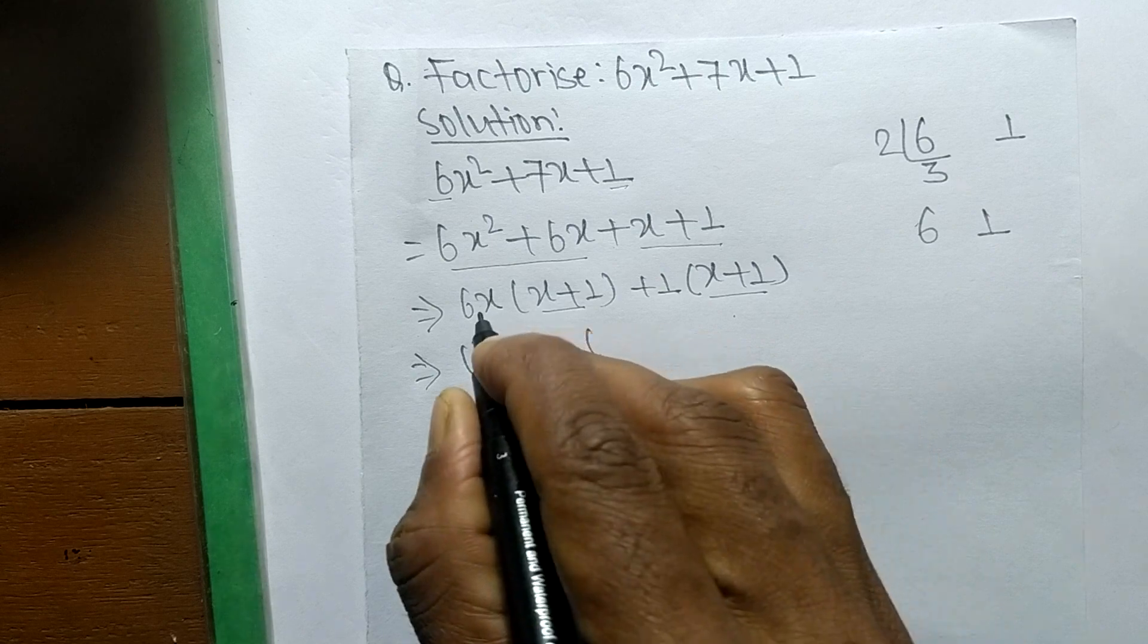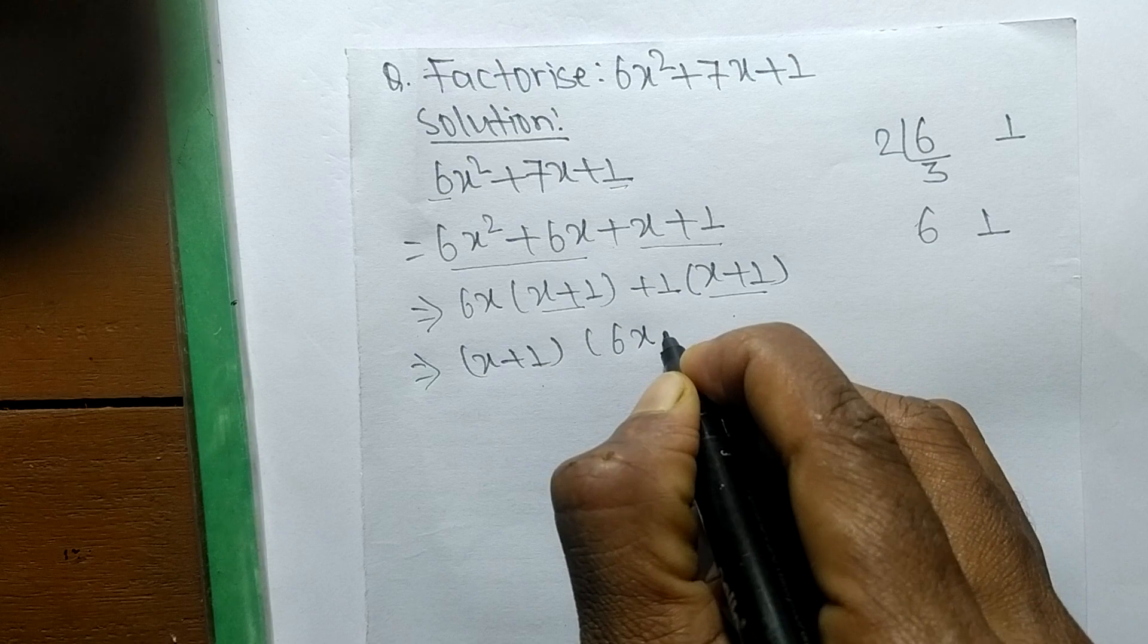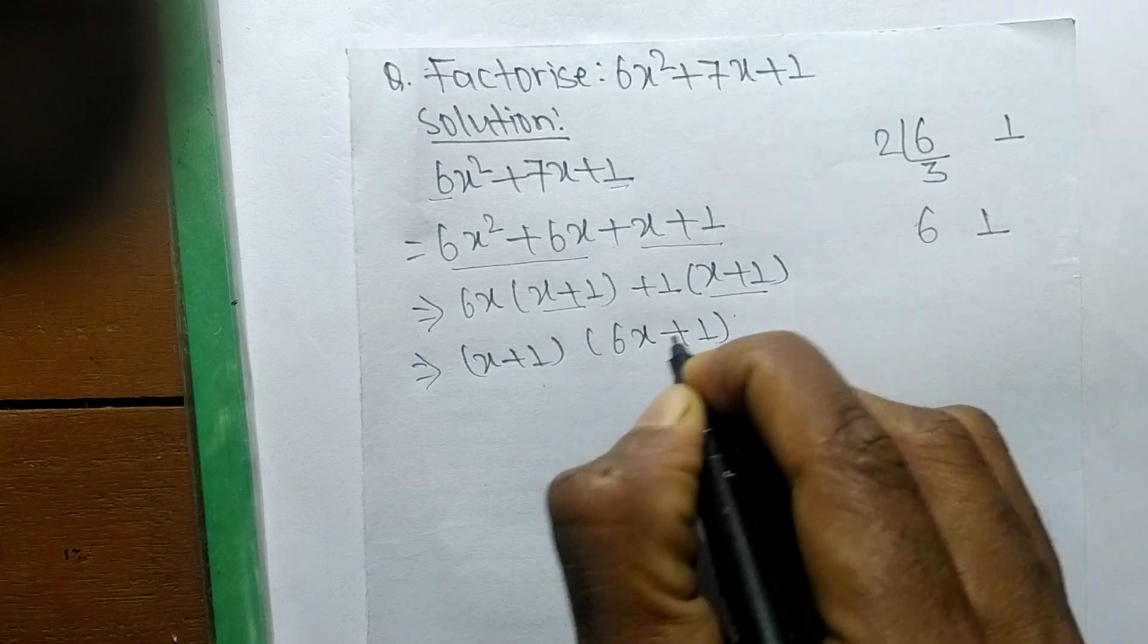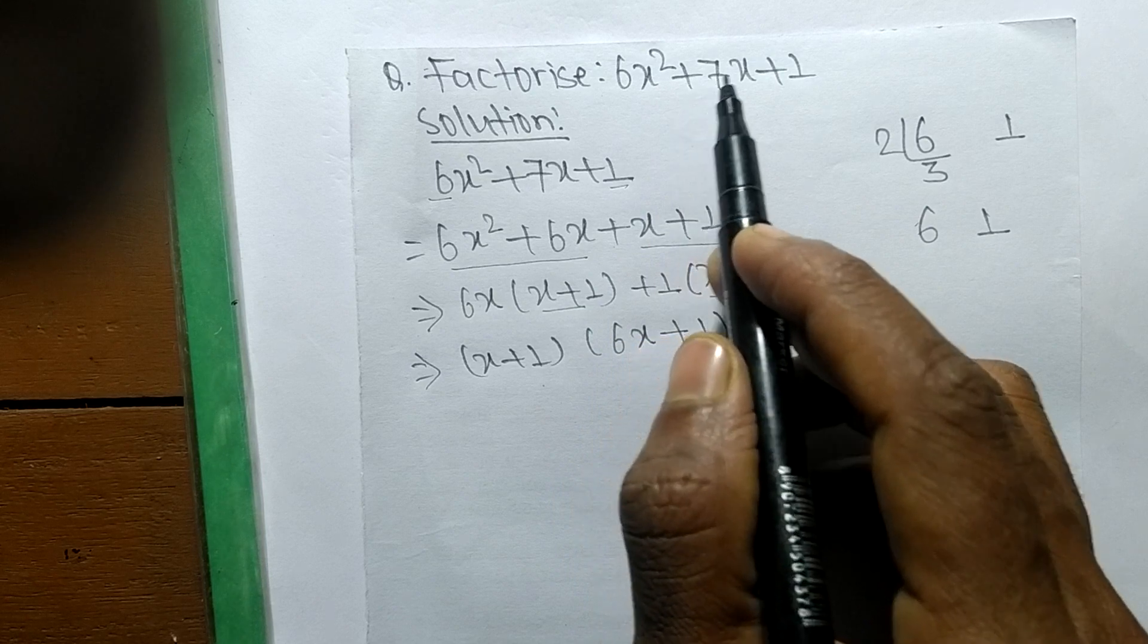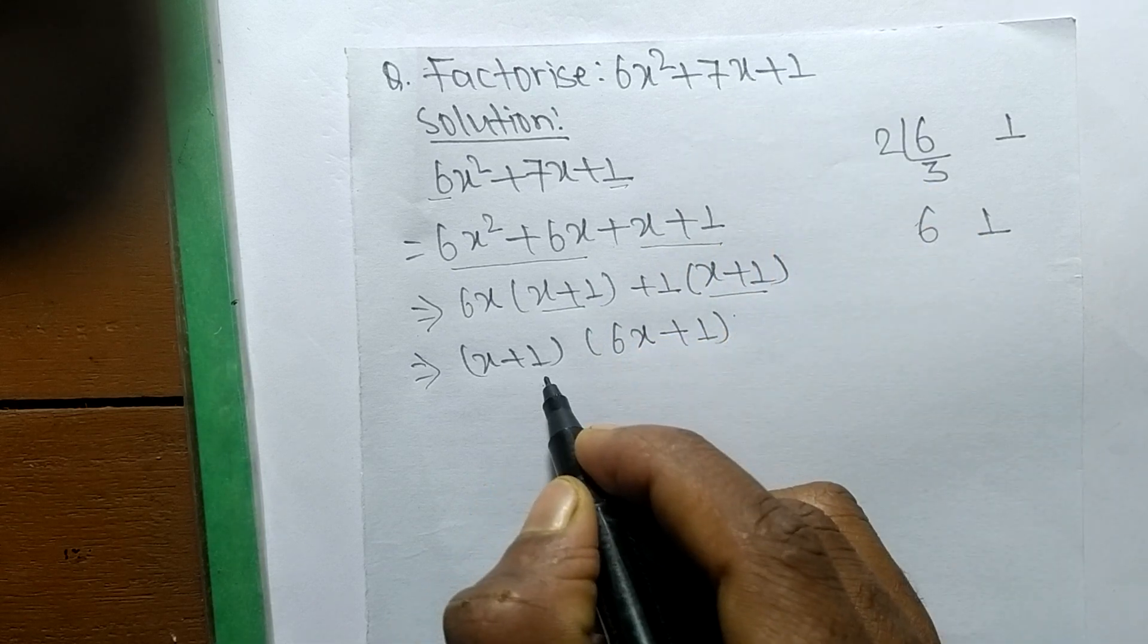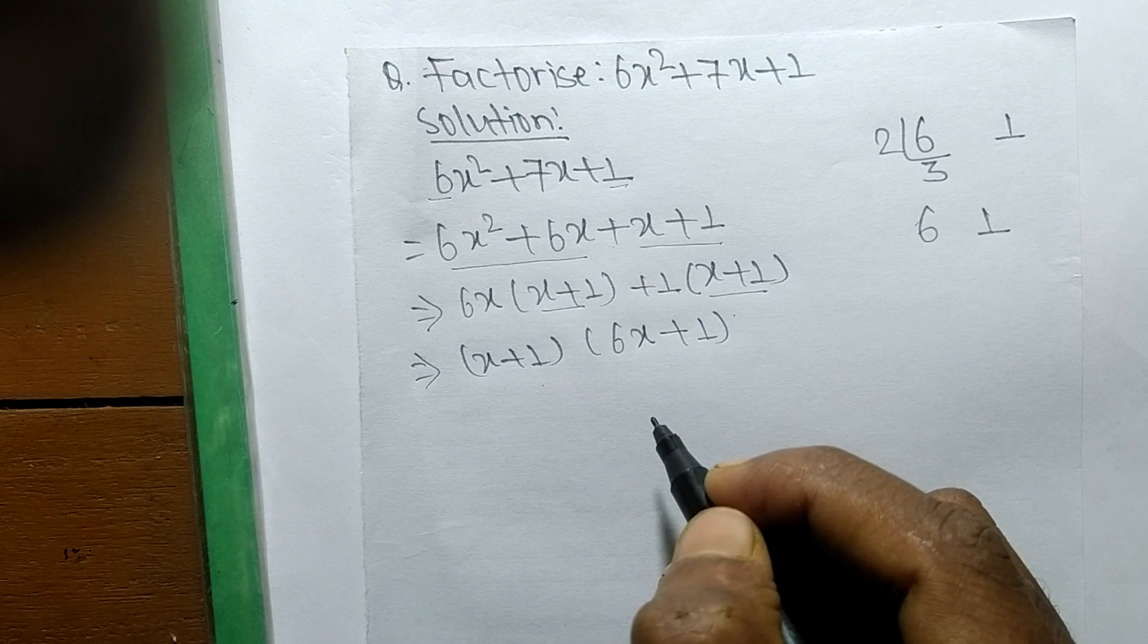The remaining part in first expression is 6x, and the remaining in second one is +1. So the factors of 6x² + 7x + 1 is (x + 1) and (6x + 1).